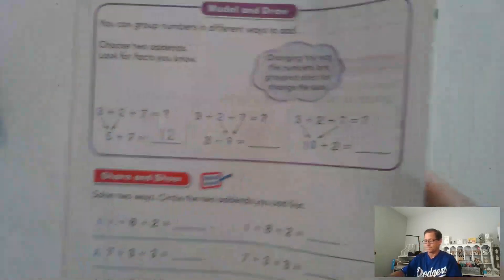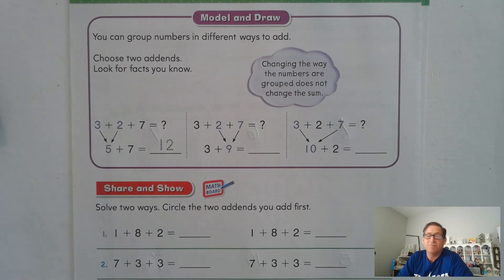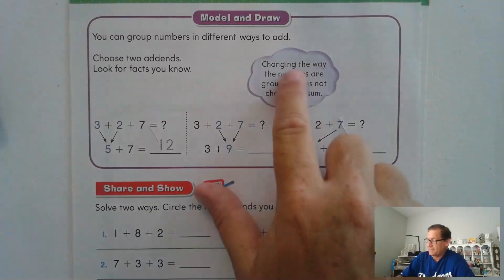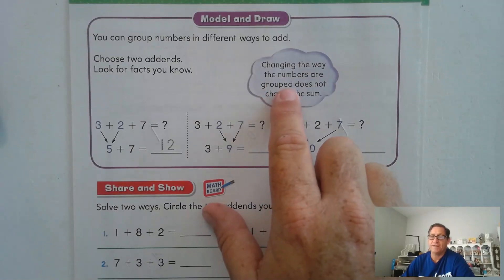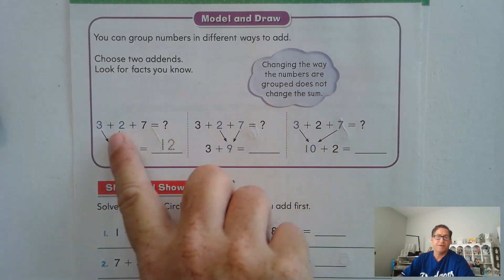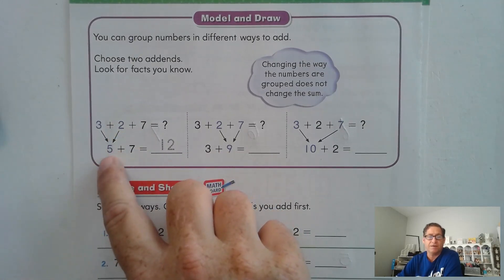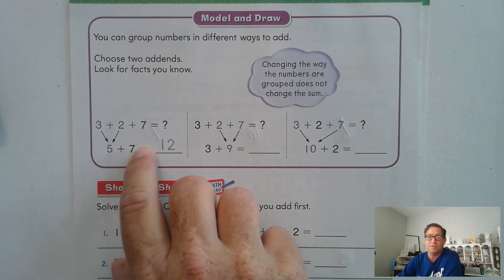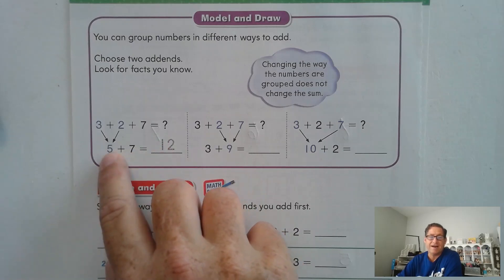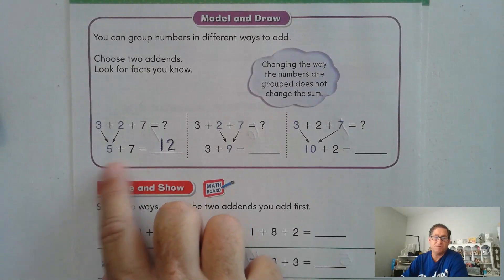Page 134. So we can group numbers in different ways to add. Choose two of the three addends and look for facts that you know. Keep in mind that changing the way the numbers are grouped does not change the sum. So here, if you looked at three plus two plus seven and said, oh, I know what three plus two is — that's five. Now we're left with five plus seven. You could do a double: five plus five is ten and add two more — that's twelve.